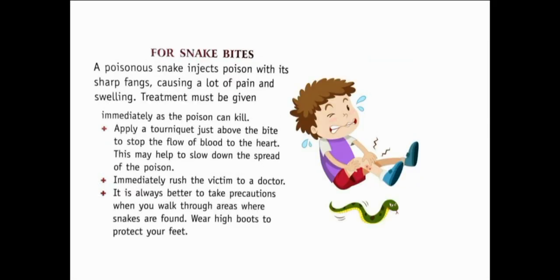Rush the victim to the doctor. For snake bites, a poisonous snake injects poison with its sharp fangs, causing pain and swelling. Treatment must be given immediately as the poison can kill. Apply a tourniquet — a tight bandage — just above the bite to stop the flow of blood toward the heart. This helps slow the spread of poison in the body. Rush the victim to the doctor immediately.